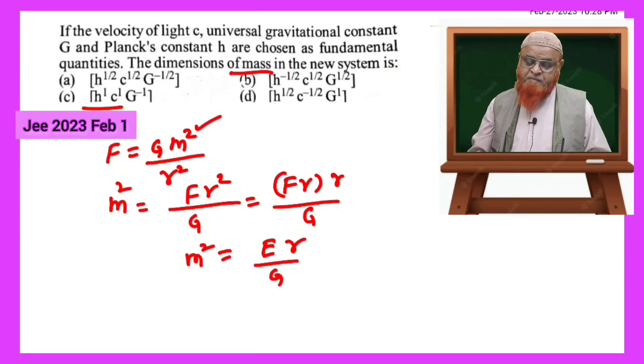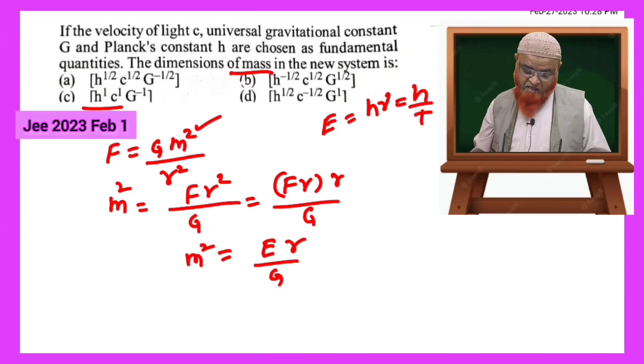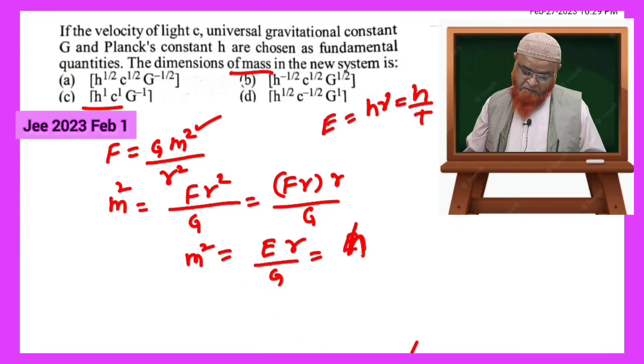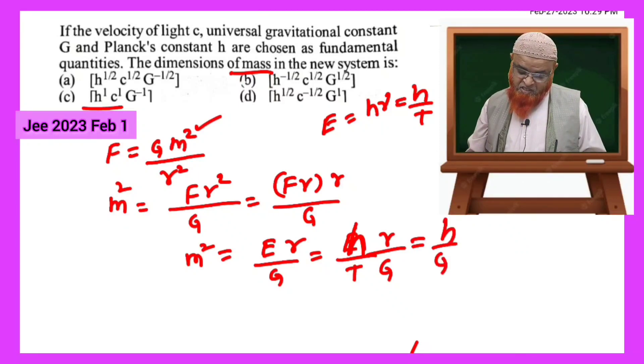After that, we all know that energy is equal to h nu. Nu is said to be frequency, and frequency is reciprocal of time, so h by t you can consider here. So you can write h by t into r by G. Now you take h by G into r by t. R means length by t.